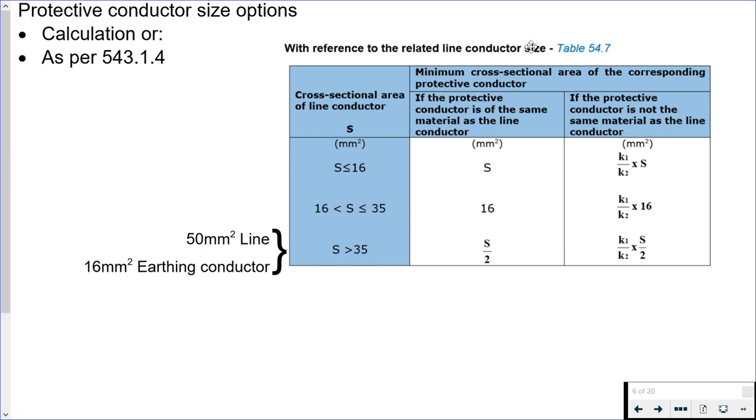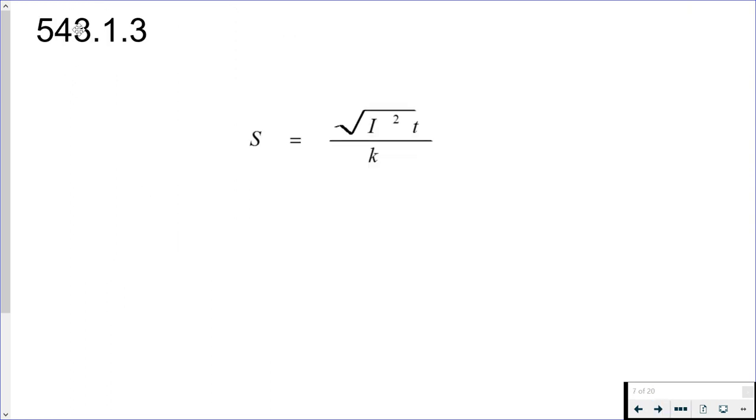If we were selecting as per regulation 543.1.4, then that protective conductor would have to be at least 25 millimeter squared. So the protective conductor has not been selected as per the second point. Hopefully if this is an initial verification you'll have the calculations there from the designer, but if it's a periodic inspection you probably will not, so you'll have to carry out the calculation yourself to confirm that this 16 millimeter squared earthing conductor meets the requirements for thermal constraints. 543.1.3, that's where we have the calculation method.